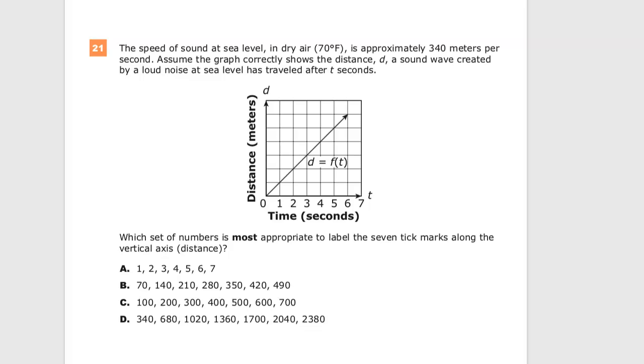This is an Integrated Math 1 practice test for TNReady, question number 21 on the 2019-20 test. The speed of sound at sea level in dry air at 70 degrees Fahrenheit is approximately 340 meters per second. Assume the graph correctly shows the distance a sound wave created by a loud noise at sea level has traveled after T seconds.